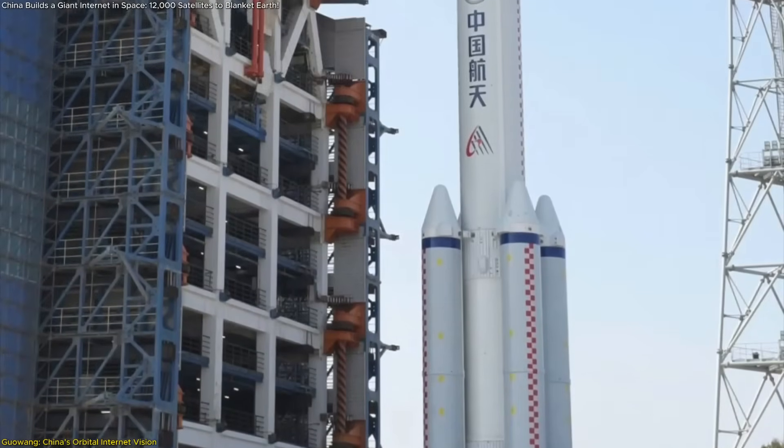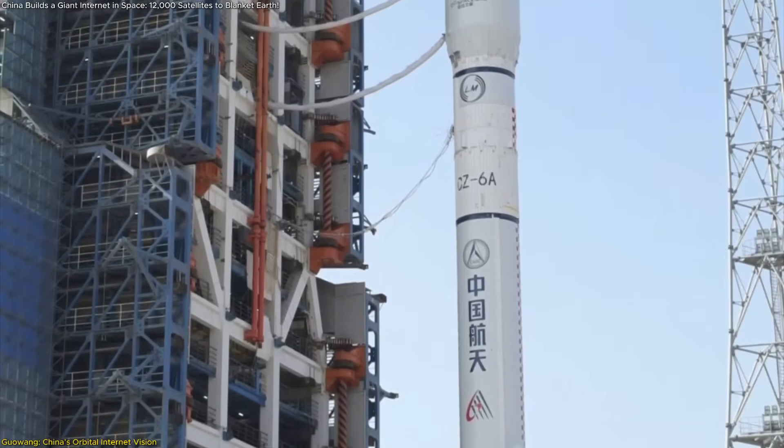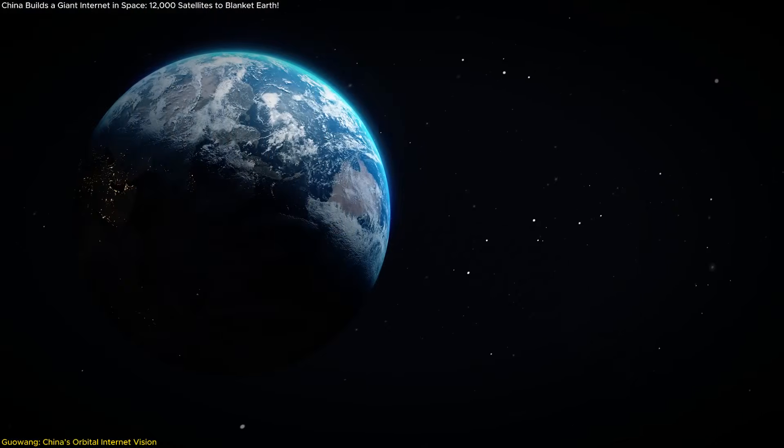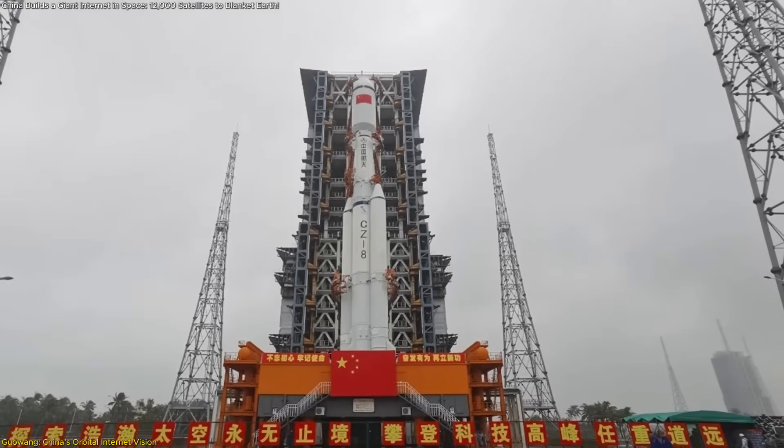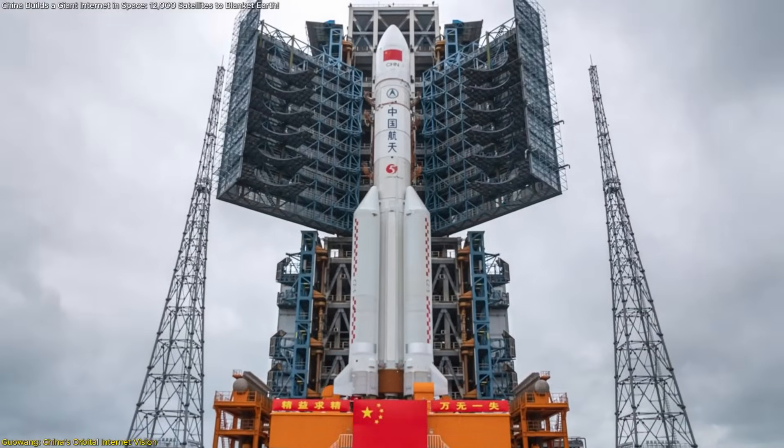The satellites are being deployed using different configurations of the Long March rocket family. Two upcoming missions, scheduled around July 30th and August 12th, will utilize the Long March 8A and 5B rockets.